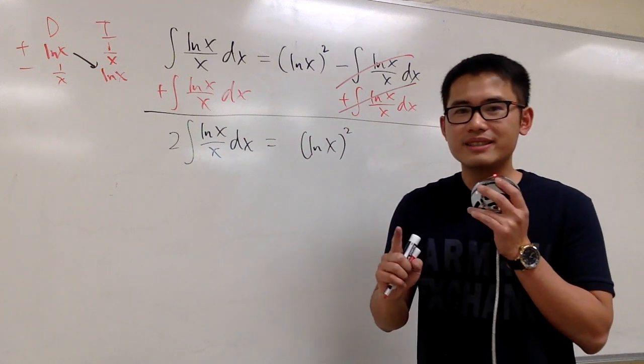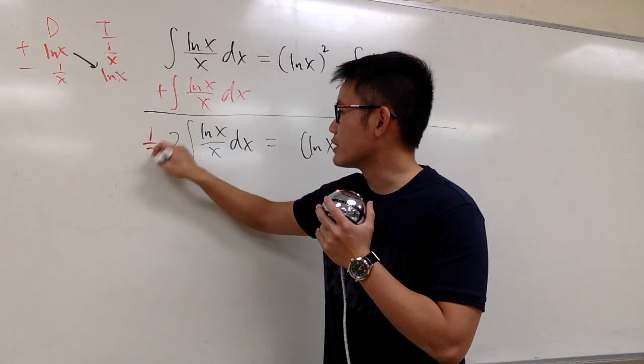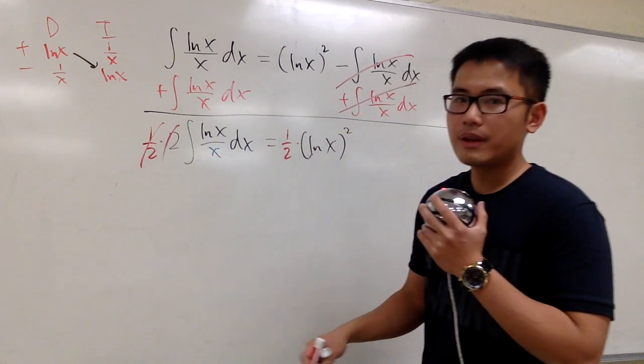But then we are not done yet, because we don't want to have this two. It's okay, let's multiply both sides by 1 half. So that this and that cancel. And finally, we can say, let me just put it down right here.